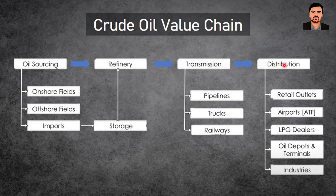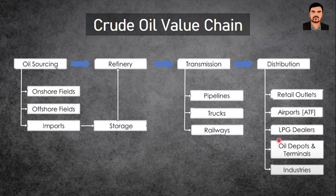After transmission comes distribution to various places: retail outlets like petrol pumps, airports for aviation turbine fuel for flights like IndiGo, LPG dealers like Bharat Gas for cooking gas, and oil depots and terminals. Crude oil is also a raw material for various industries — Manali Petrochemicals for polyol manufacturing, Shalimar Paints and Asian Paints where crude oil is the raw material for paint production. Even Gail takes natural gas or LNG supply derived from crude oil refining.